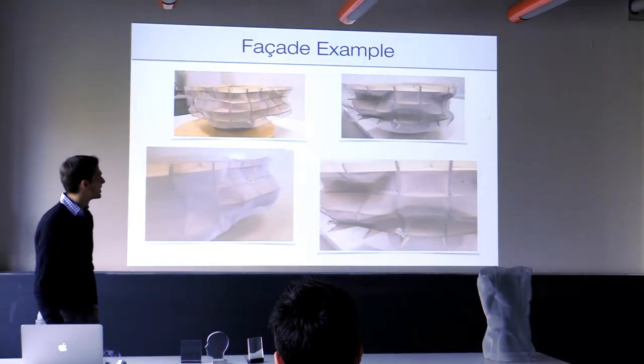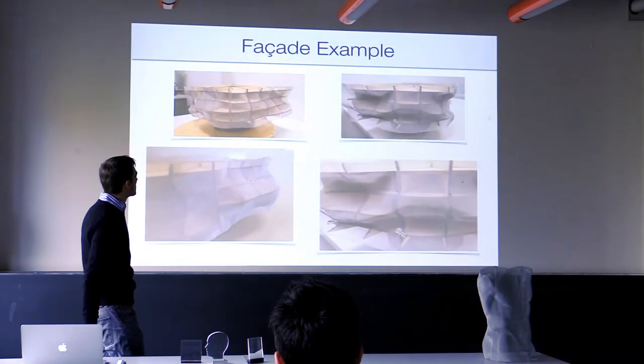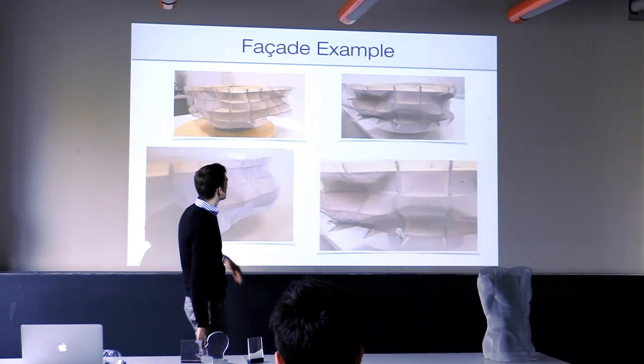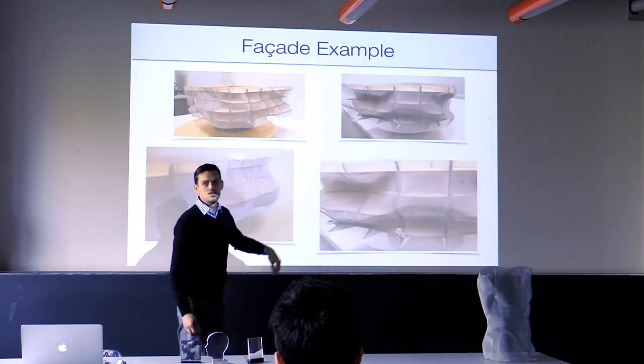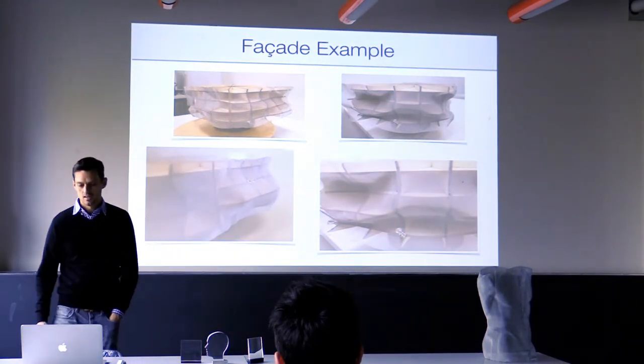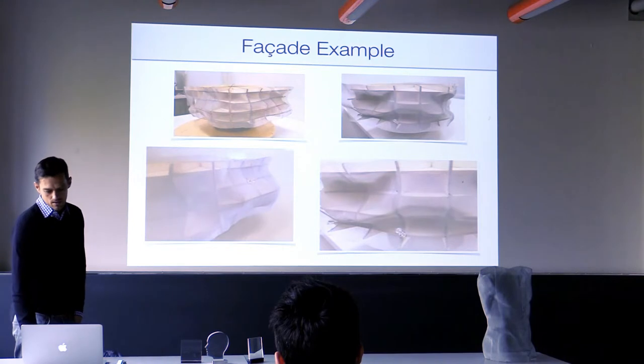For a more freeform facade, you can optimize for a shape with no singularities — everything continuous, smooth, and fitting together. You can also then optimize for other things like the shading performance of such a facade.